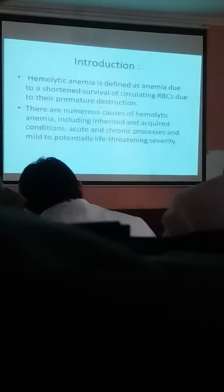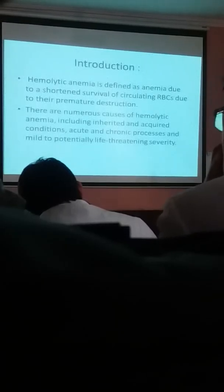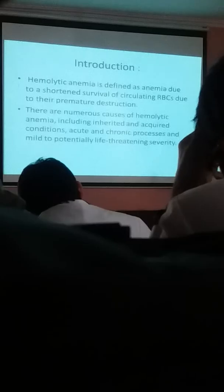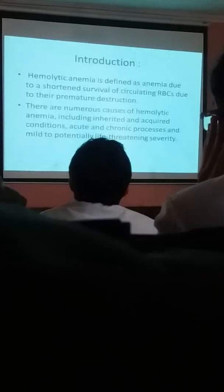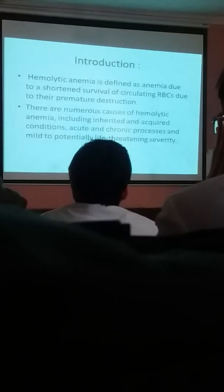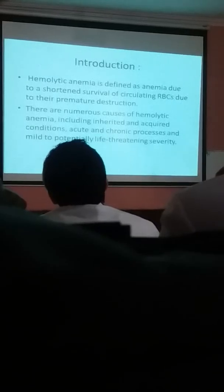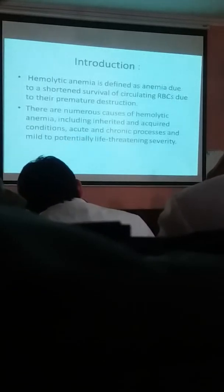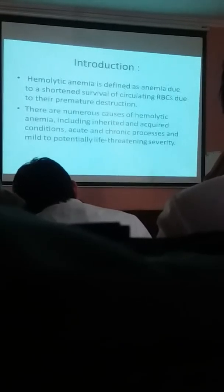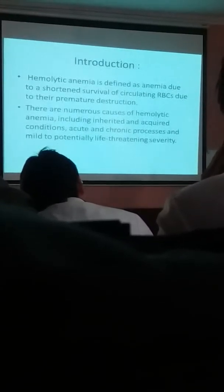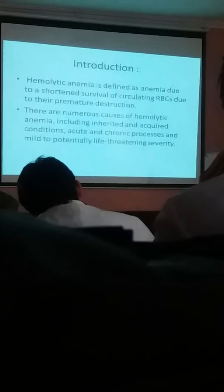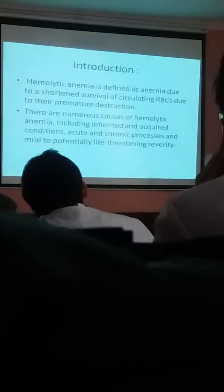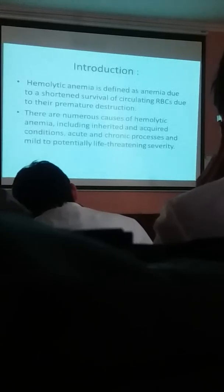Regarding the definition, hemolytic anemia is the anemia due to shortened survival of the circulatory RBC because of their premature destruction in the peripheral circulation, or either in the reticuloendothelial system or intravascularly. There are numerous causes, and hemolytic anemia as a group constitutes many disorders. This can broadly be classified whether they are inherited or acquired, whether the presentation is acute or chronic, or mild to very life-threatening in severity.